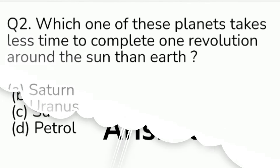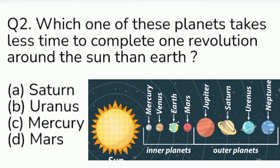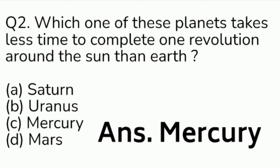Question number 21. Which of these planets takes less time to complete one revolution around the sun than Earth? Option A: Saturn. Option B: Uranus. Option C: Mercury. Option D: Mars. Answer is Option C, Mercury.